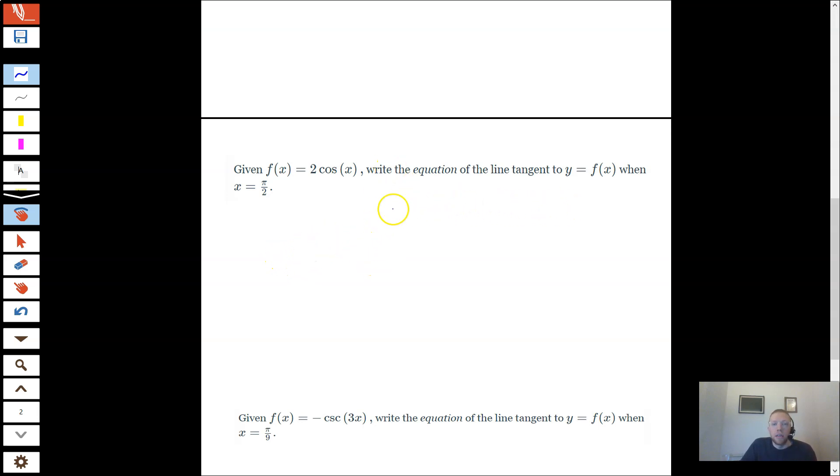We are going to find the equation of tangent lines to these trig functions. So we're going to use our trig derivatives, and we're going to use the unit circle on this.